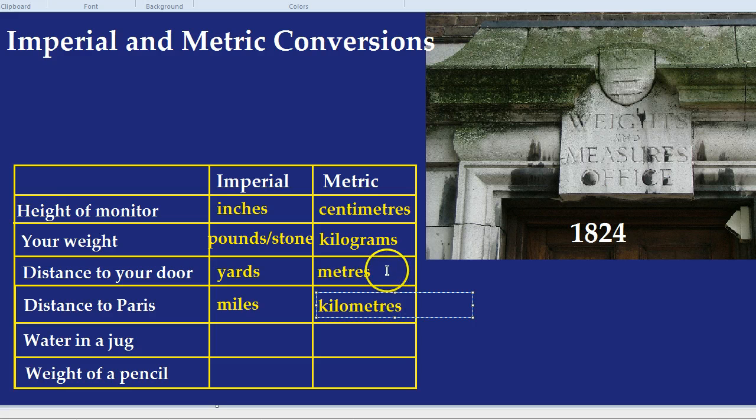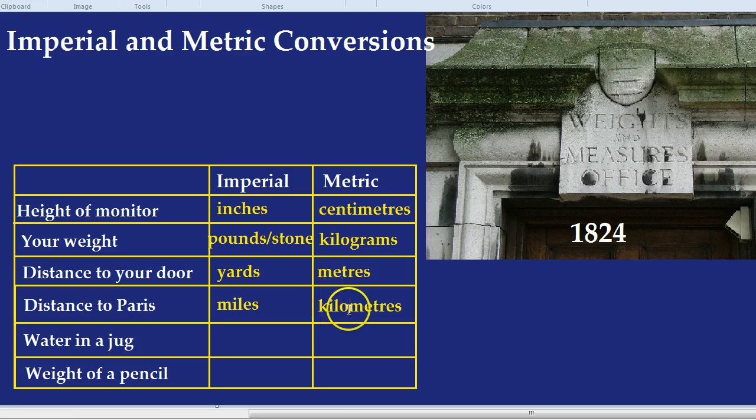A quick primer on words. Kilo is the equivalent of a thousand. So kilometres is a thousand metres. Kilograms, a thousand grams.